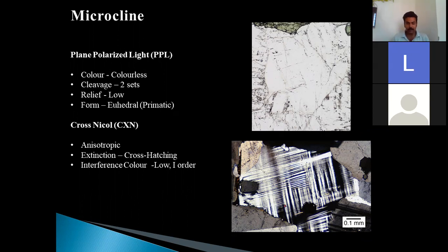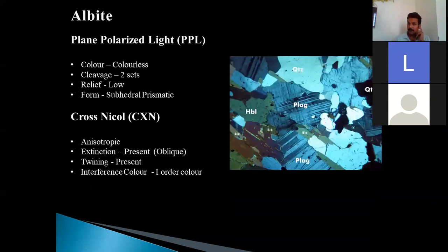So the orthoclase and microcline was the alkali feldspar. Now we'll turn over to the plagioclase feldspar where we are going to discuss two minerals. The first is albite. Albite is the soda-rich plagioclase feldspar where sodium is the dominant component, whereas in labradorite the percentage of calcium increases. In plane polarized light, the color is colorless. The cleavage, of course, two sets are visible. Relief is low and the form is somewhat subhedral prismatic.